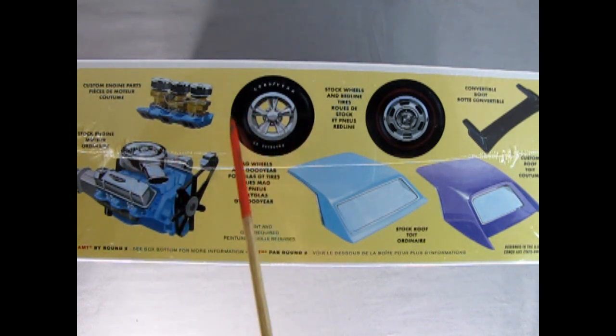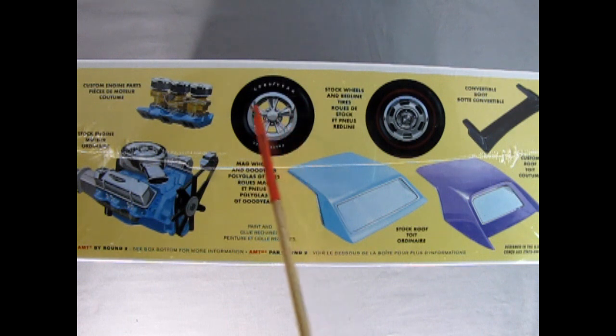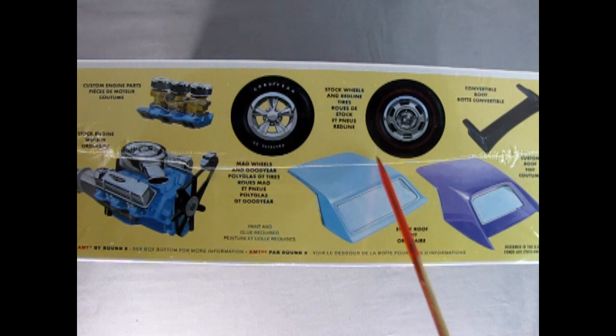Here we have our Goodyear Polyglass GT tires with the white letters printed on, as well as our mag wheels. And then for the stock we have the Pontiac rally wheel with the center cap, as well as the redline tires.